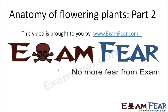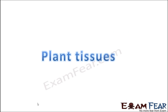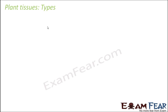This video on anatomy of flowering plants, part 2, is brought to you by examfew.com. With no more fear from exams in mind, we will now talk in detail about plant tissues. Once we are thorough with plant tissues, we will go ahead and talk about the internal structure of various parts of plants, like the root, stem, and leaf. Plant tissues are defined as a group of cells which work together for a specific function.